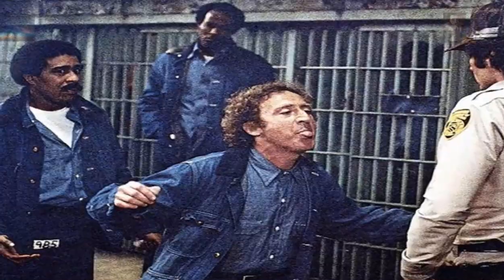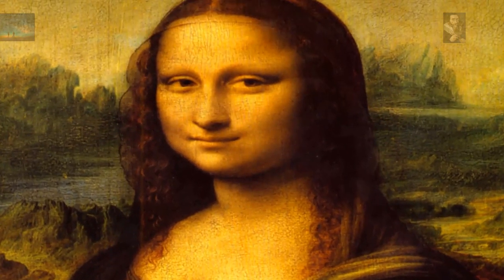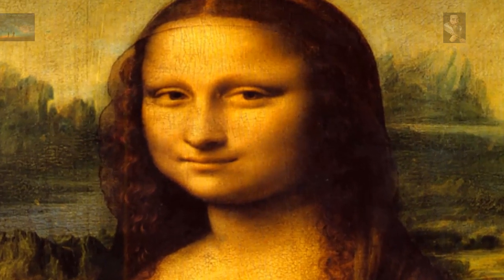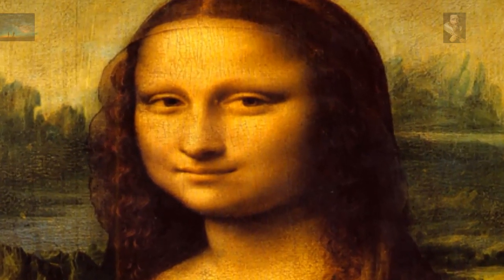And at number one, you guessed it, the Mona Lisa, a real hidden code in her eyes. Will she ever give up her secrets? Intrigue is usually focused on her enigmatic smile.